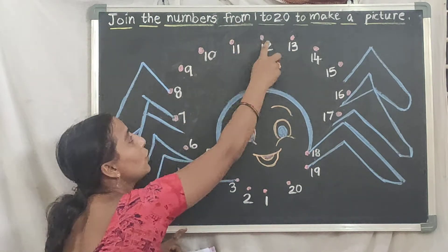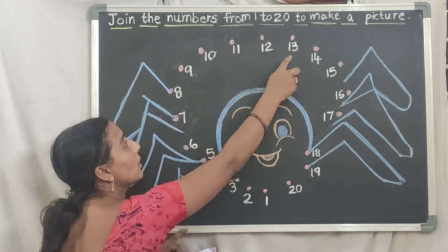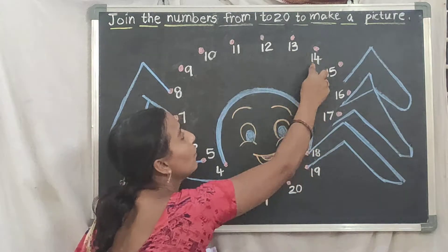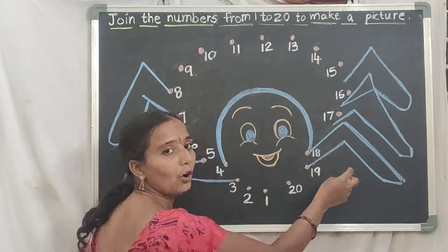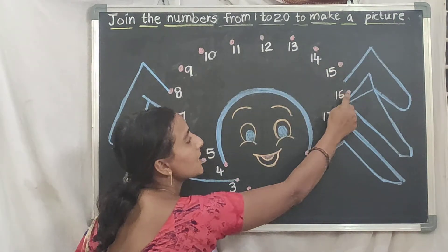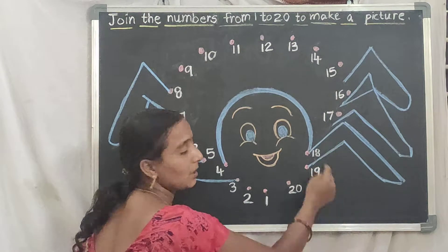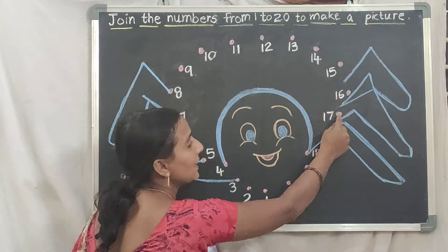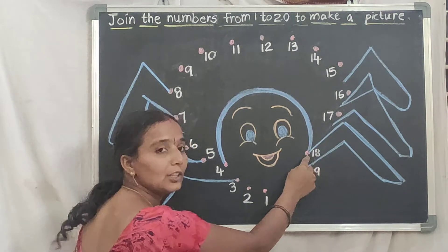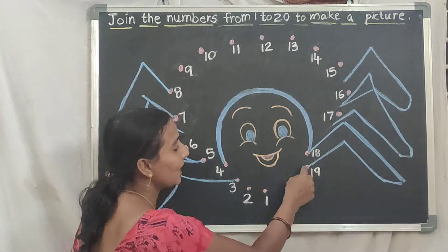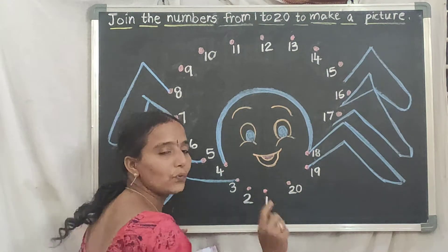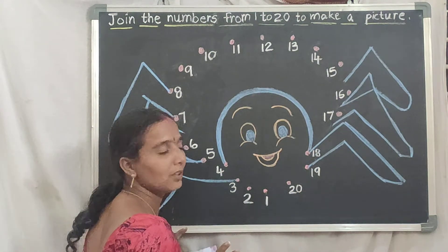11 dot, 12 dot, 13 dot, 14 dot, 15 dot, 16 dot, 17 dot, 18 dot, 19 dot, then 20 dot. So what should you do here?